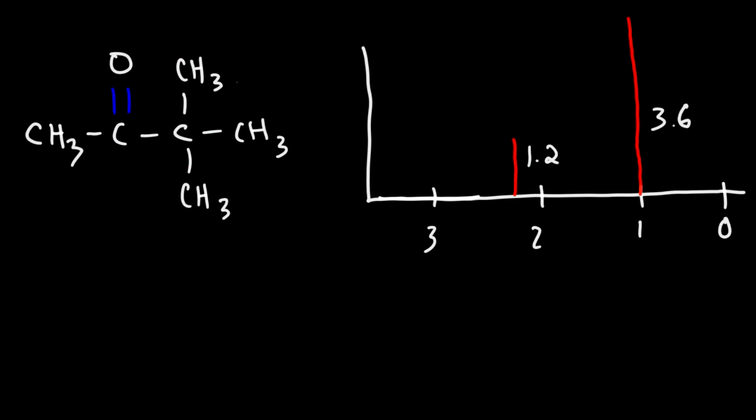So let's call it signal A. The three protons in this methyl group shows up as another signal, which we'll call signal B.